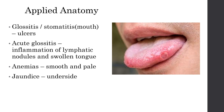Another applied anatomy is glossitis, also called as stomatitis, or simply ulcers of the tongue, which are commonly seen. Acute glossitis may be due to inflammation of lymphatic nodules. It will lead to swollen tongue and pain while eating.